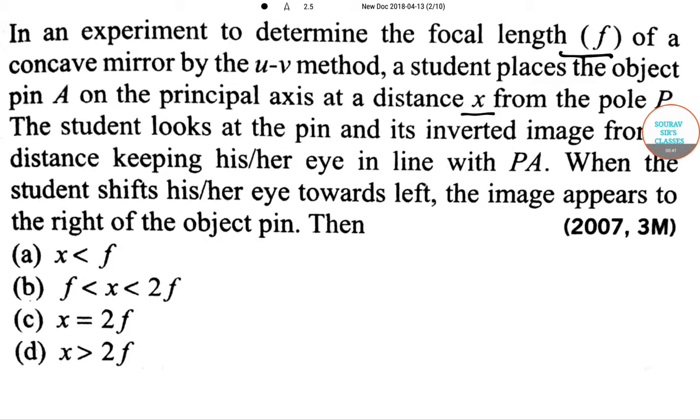Then we have to find out the position of the object pin A, that is X, and we have four options: Number one, X is less than f; or X is between 2f and f; X is equal to 2f; or X greater than 2f.